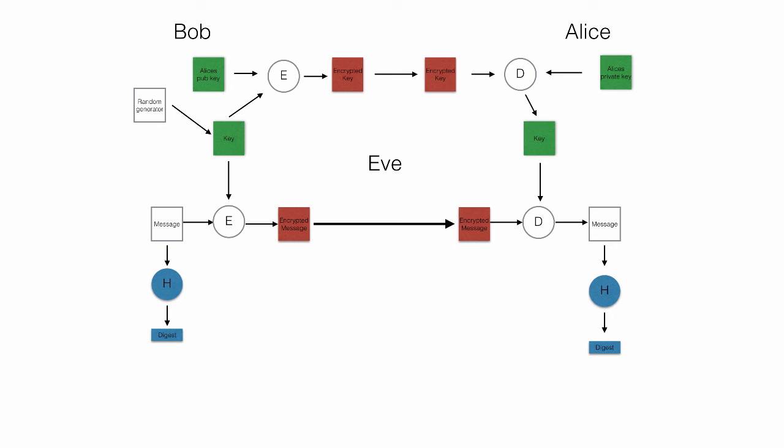But what if Eve is really clever? If she can get hold of the symmetric encryption key, she can put whatever she wants into the encryption algorithm and send encrypted messages. By doing that she can also create digests, and it might look like the messages are coming from Bob. So we need to secure the digests so that Alice is confident that the message is coming from Bob and no one else. Bob does that by encrypting the digest with his private key and attaching that to the encrypted message.